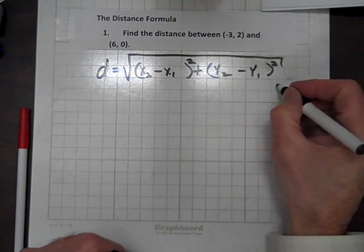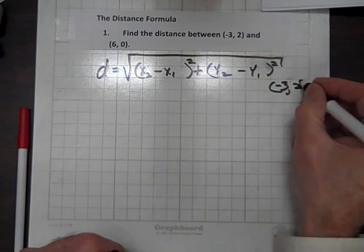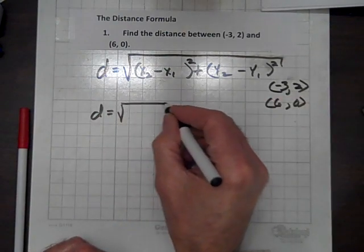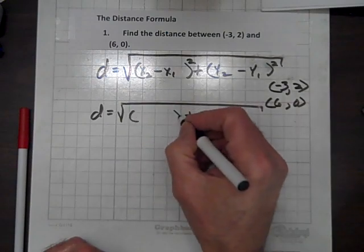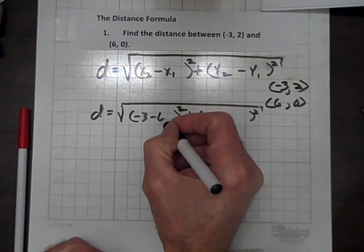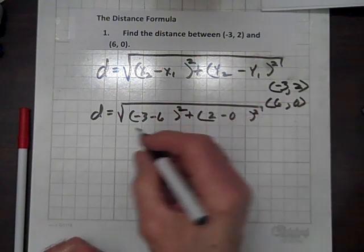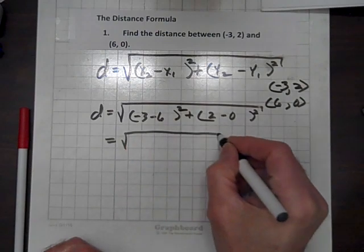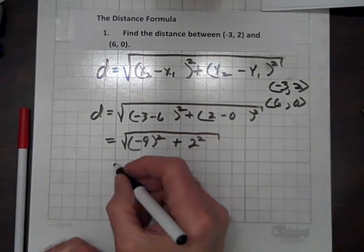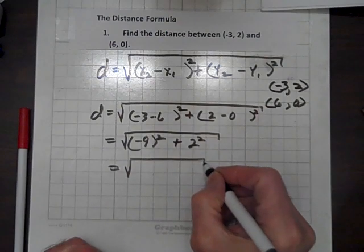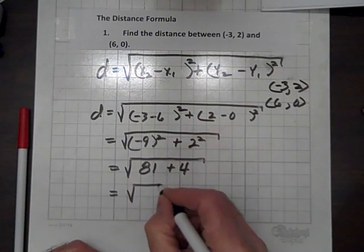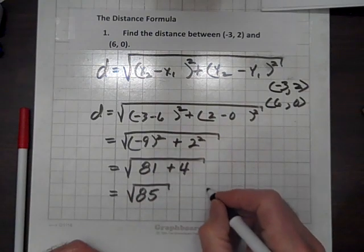The ordered pairs we're interested in are negative three, two and six, zero. So d equals the square root of negative three minus six, quantity squared, plus two minus zero, quantity squared. That equals the square root of negative nine squared plus two squared, which equals the square root of eighty-one plus four, which equals the square root of eighty-five, and we are done.